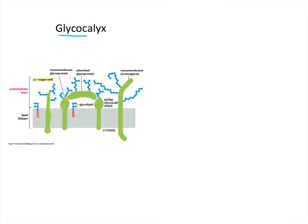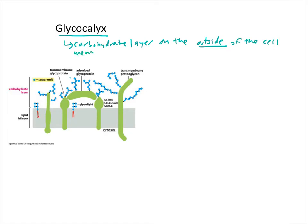The glycocalyx is a carbohydrate layer on the outside of the cell membrane. Sometimes this is called a sugar coating — not like for candy, but the prefix glyco refers to something sweet or sugar, so some sort of saccharide, and this layer is outside the cell.